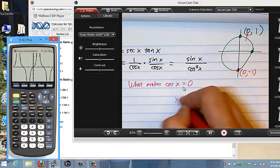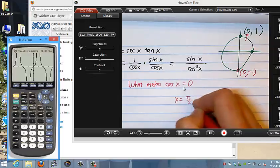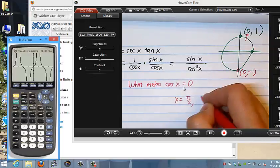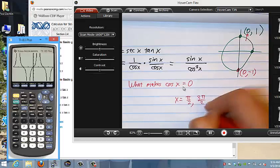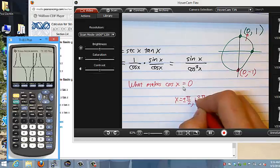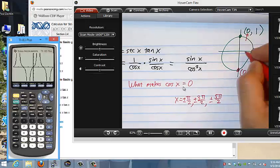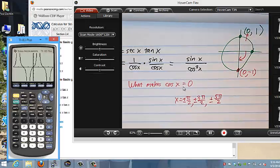Well, things like x equals pi over 2, 3 pi over 2, 5 pi over 2, plus or minus these things, right? You could go back pi over 2 and that happens. So these are the places where we're going to have vertical asymptotes.